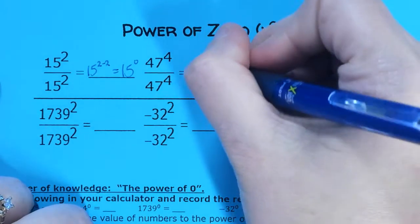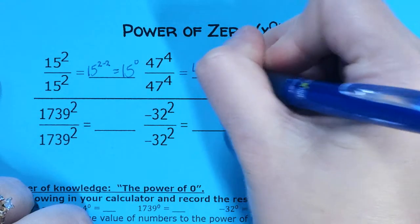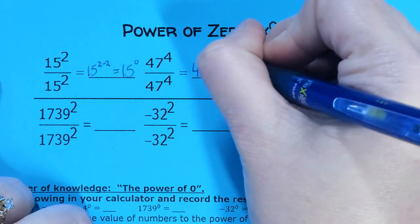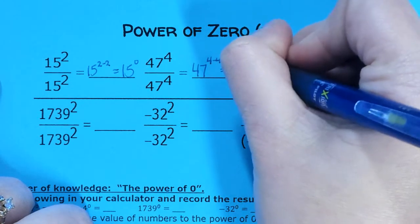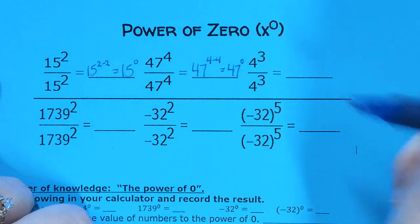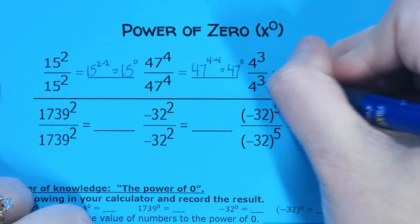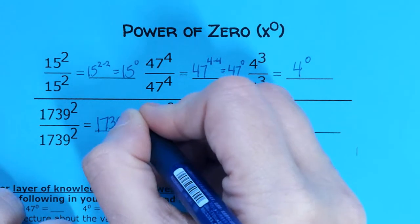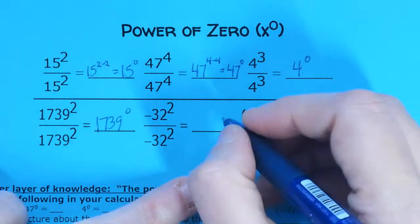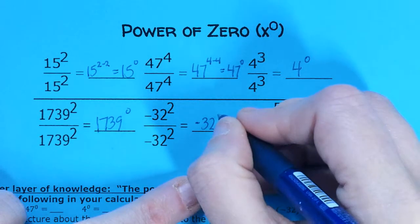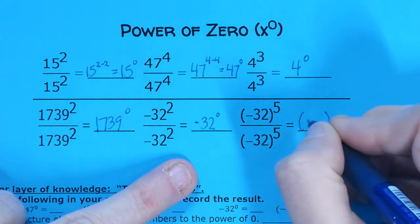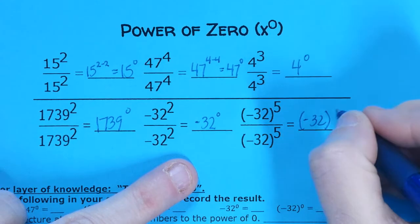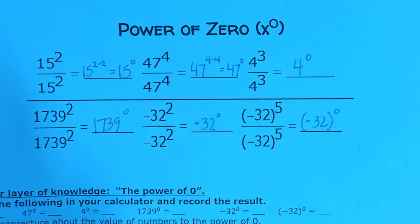Same with 47 to the 4th over 47 to the 4th. I would write 47, keep the base, subtract the exponents, and I wind up with 47 to the 0. The same thing happens here. I would have 4 to the 3 minus 3 is 0, 1739 to the 2 minus 2, which is 0, negative 32 to the 2 minus 2, which is 0. And then this one in parentheses, I have negative 32 to the 5 minus 5, which is 0. So all of these problems give me a 0 power.